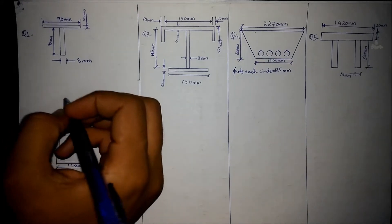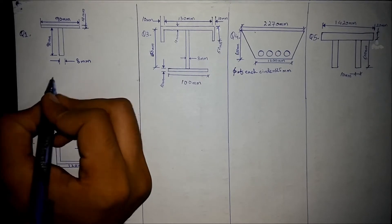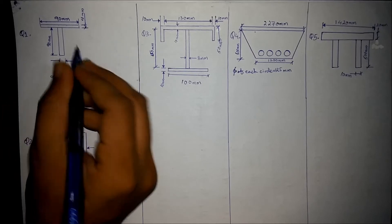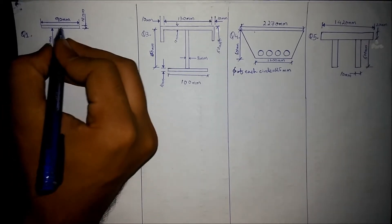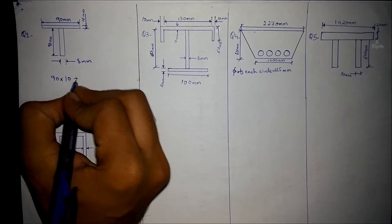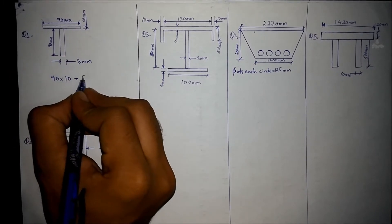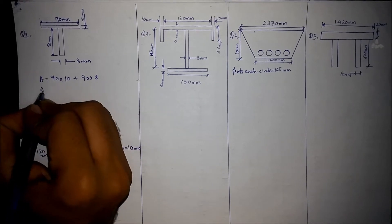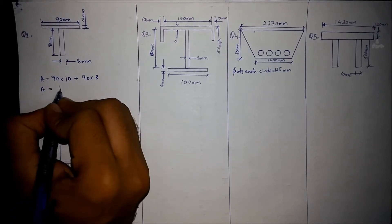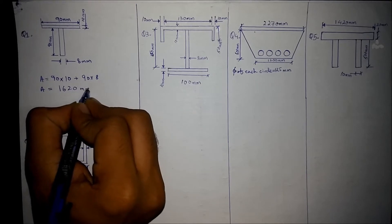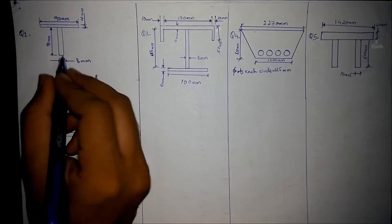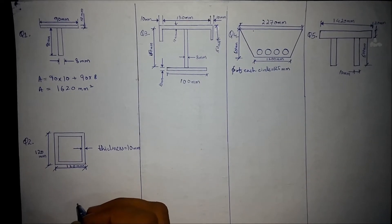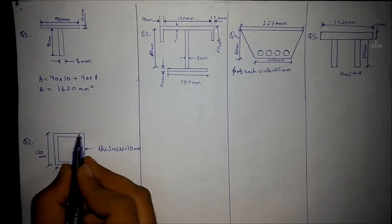Starting with the first question, the area of this cross section will be 90mm × 10mm for rectangle one, and the second rectangle area will be 90 × 8. The total area comes out to be 1620 mm², since the units were in millimeters.